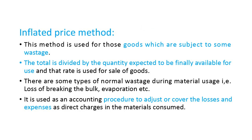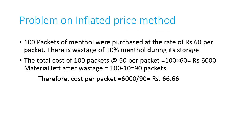The inflated price method is used for goods subject to wastage. For example: 100 packets of menthol purchased at ₹60 per packet with 10% wastage during storage. Because of 10% wastage, we calculate cost for 90 packets instead of 100. Total cost is 100 × ₹60 = ₹6,000, so cost per usable packet = ₹6,000 ÷ 90 = ₹66.67. This concludes inventory management. Thank you.